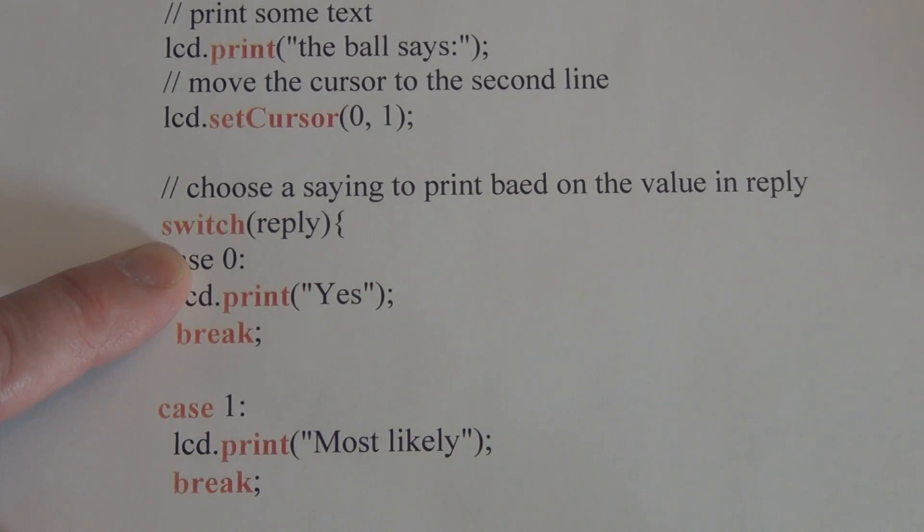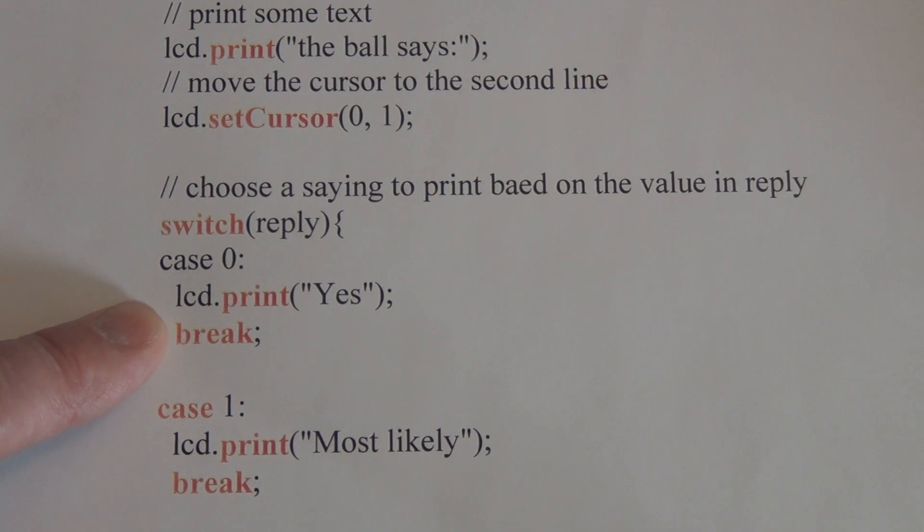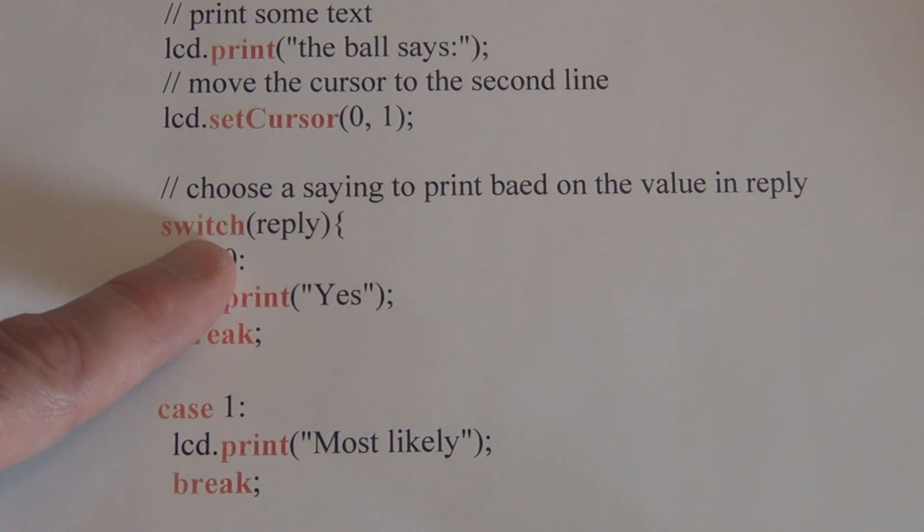So this switch statement executes different pieces of code depending on a value you give it. And each one of these different pieces of code is called a case. So we have zero through seven different statements that get to be randomly printed out depending on a value that gets returned to the switch statement.